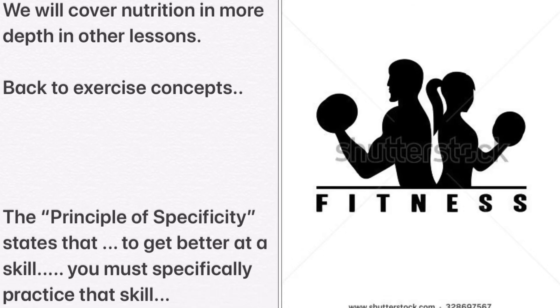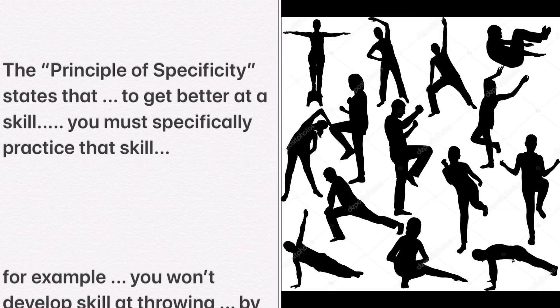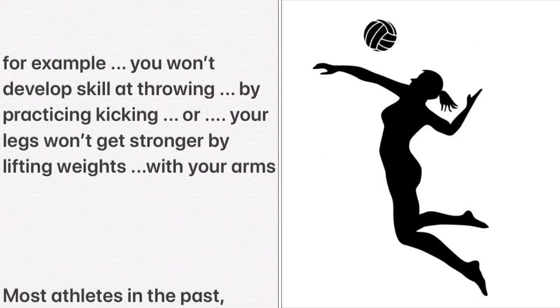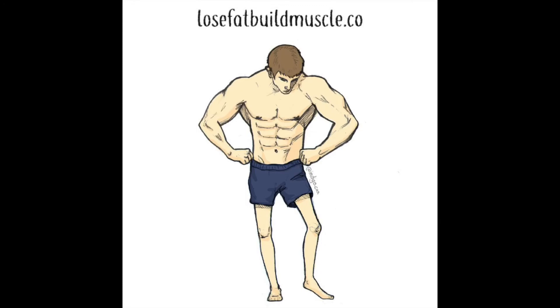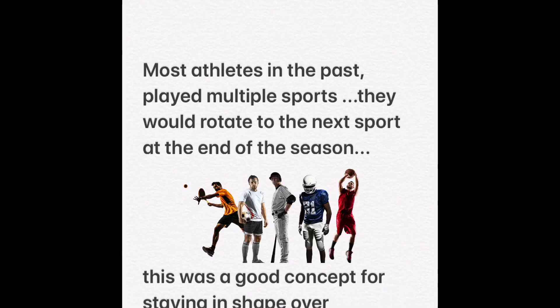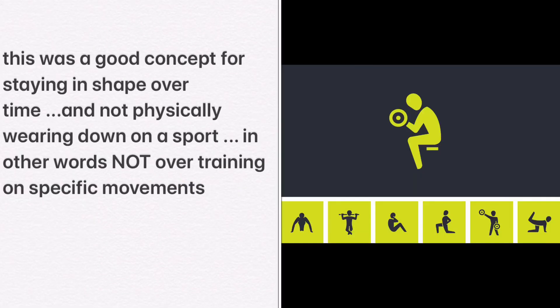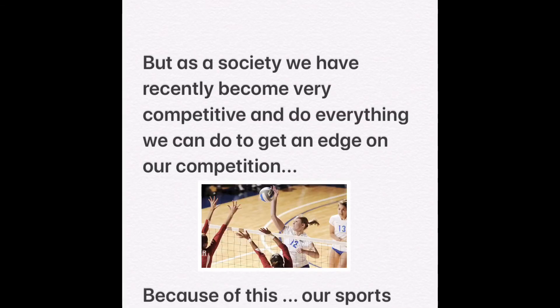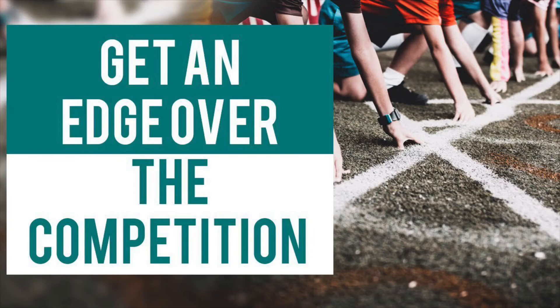Back to exercise concepts. The principle of specificity states that to get better at a skill, you must specifically practice that skill. For example, you don't develop skill at throwing by practicing kicking, and your legs won't get stronger by lifting weights with your arms. Most athletes in the past played multiple sports and would rotate to the next sport at the end of the season. This was a good concept for staying in shape over time and not physically wearing down on a sport — in other words, not overtraining on specific movements.